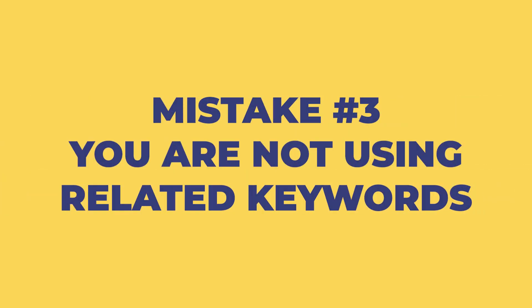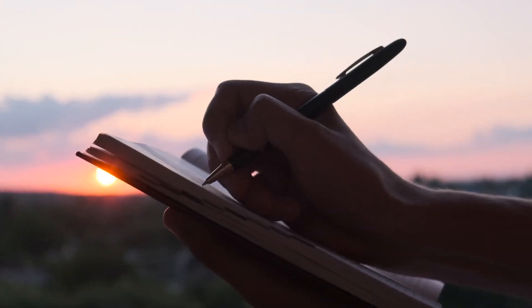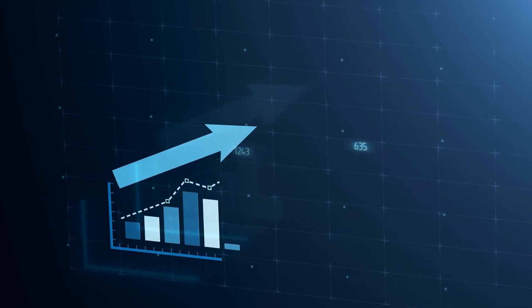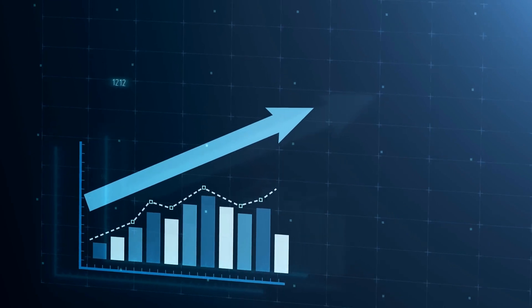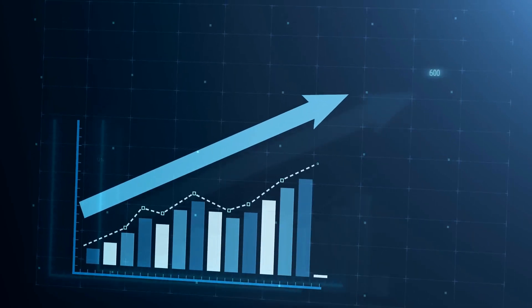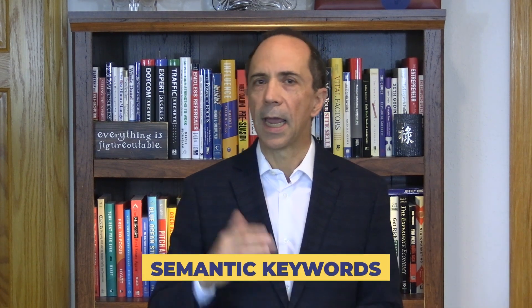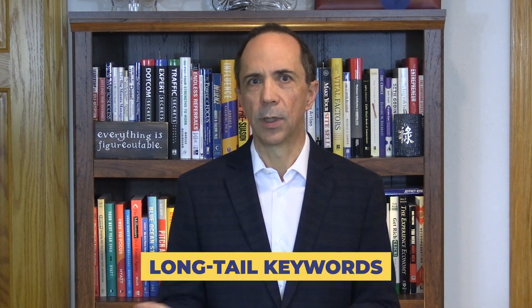Mistake number three: you're not using related keywords. When you write a good blog post, it can rank well not just for one specific keyword, but also for related terms. There are two types of useful related terms: semantic keywords and long-tail keywords.